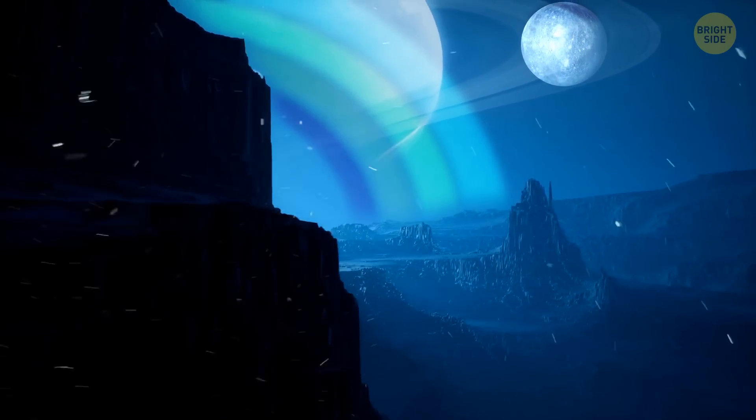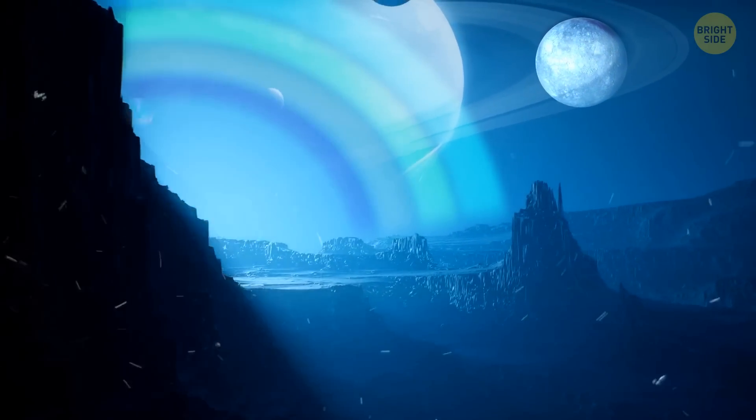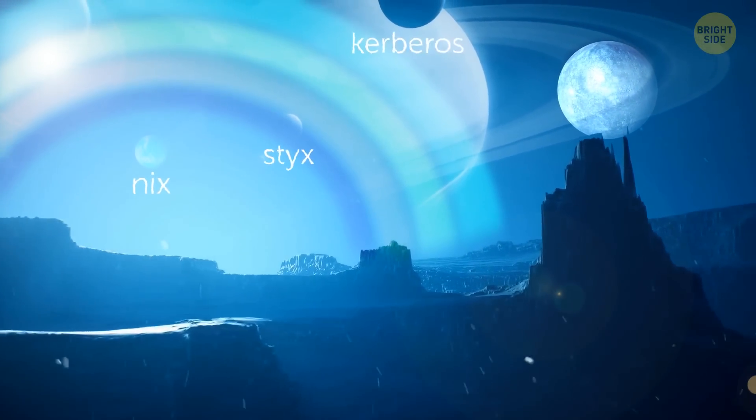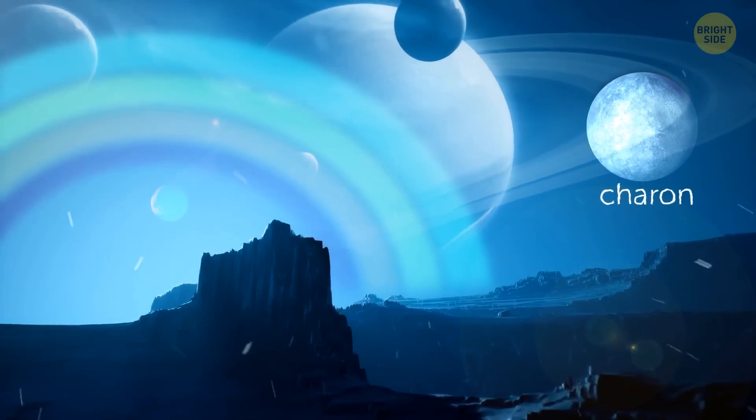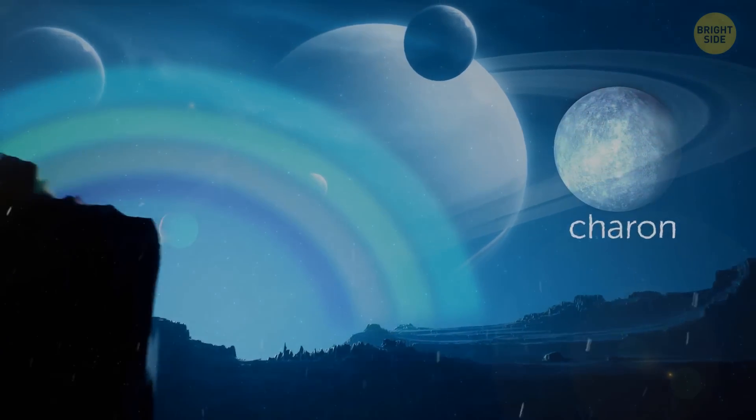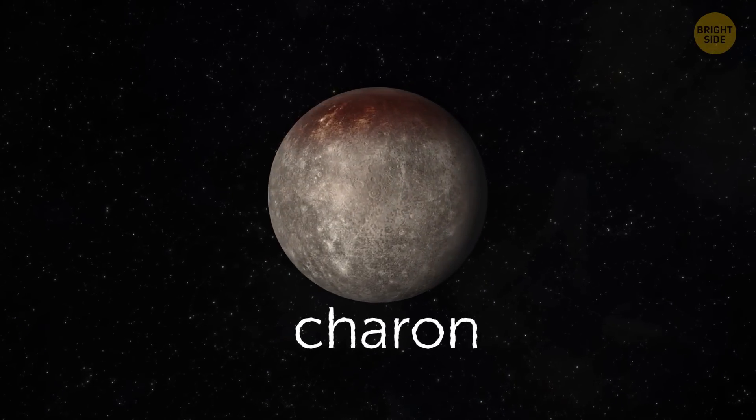And finally, while standing on Pluto, you would see its five moons: Styx, Nix, Kerberos, Hydra, and the most mysterious one, Charon. Also pronounced Charon. So, you can pronounce it however you like. I'm gonna go with Charon.